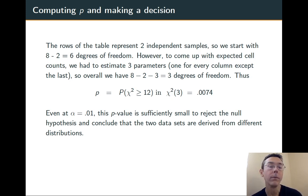By any reasonable standard, this is a small p-value. We can reject the null hypothesis and conclude that these two data sets are drawn from different distributions.